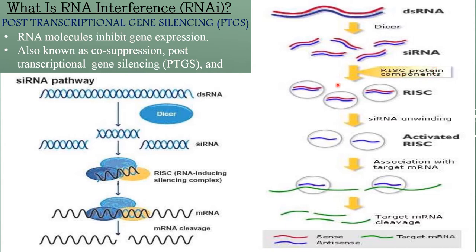After the binding of the RISC protein, the RISC protein will unwind the siRNA — that is, the double-stranded RNA will be unwound and the sense strand will be degraded. After the degradation of the sense strand, activation of the RISC protein component takes place. Then the siRNA guides the RISC component to target the mRNA, and it goes and associates with the target mRNA.